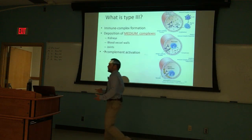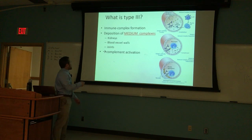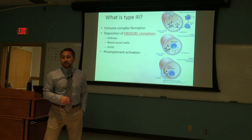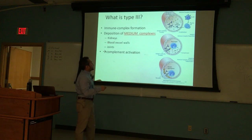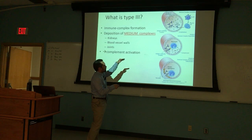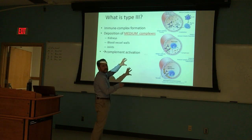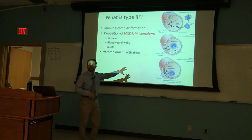Some typical destinations where immune complexes get trapped: blood vessel walls, kidneys — which are a giant filter of blood — and joints, because synovial fluid is filtered from the bloodstream. Here the complex gets stuck in the vessel wall, neutrophils respond, complement facilitates an inflammatory reaction, and you get vasculitis — an inflammatory disease of the blood vessel wall.